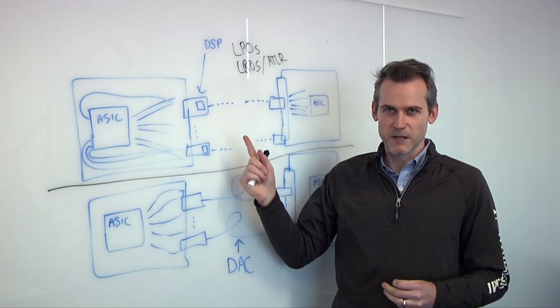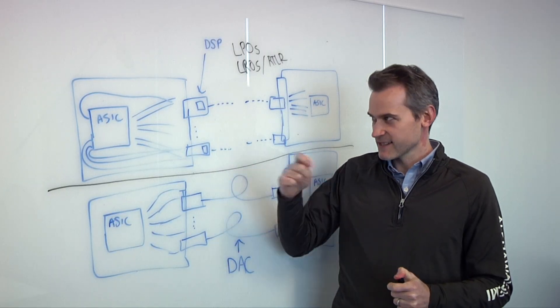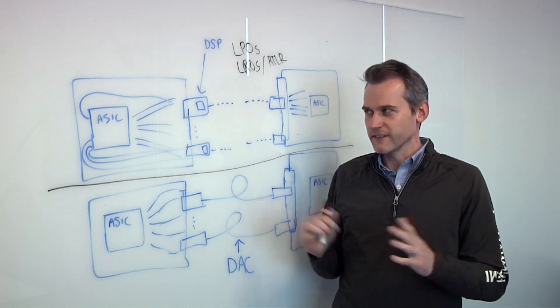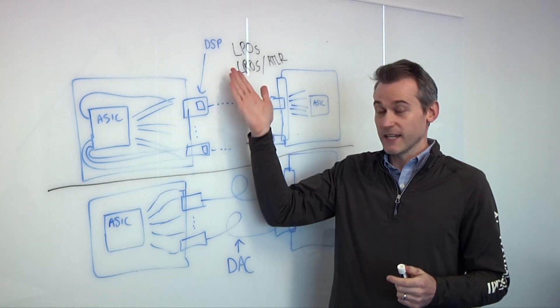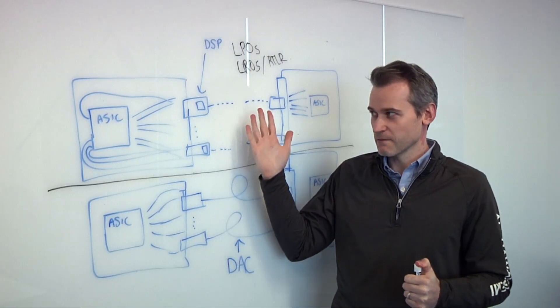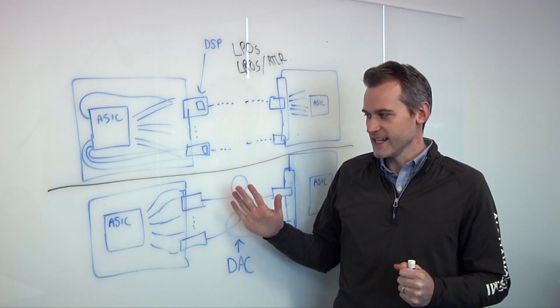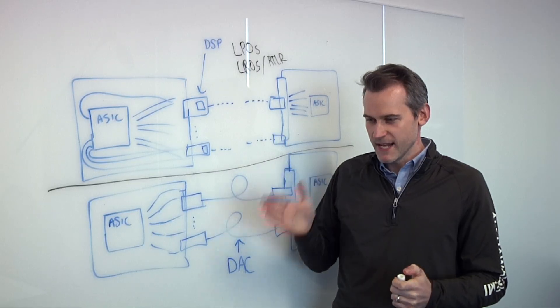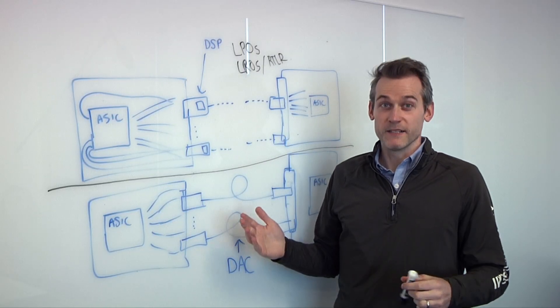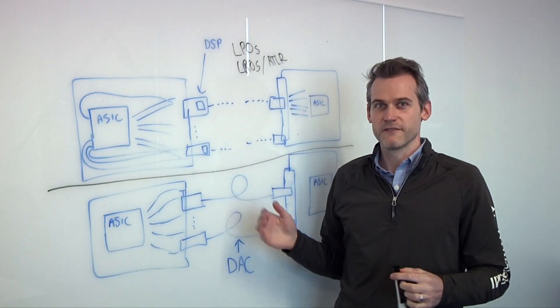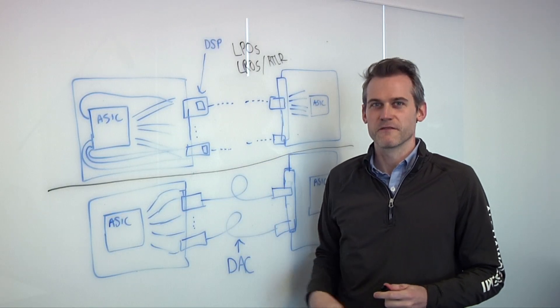They're going to try to be using these pluggables, whether it's passive DACs if it's possible, LPOs or LROs, any sort of flavor of optical retimer, complete DSPs, those are probably going to live for as long as possible. All the end users want manageability and interoperability, and that's really what's driving all these different optical interfaces for 224 gig and eventually 448 gig.